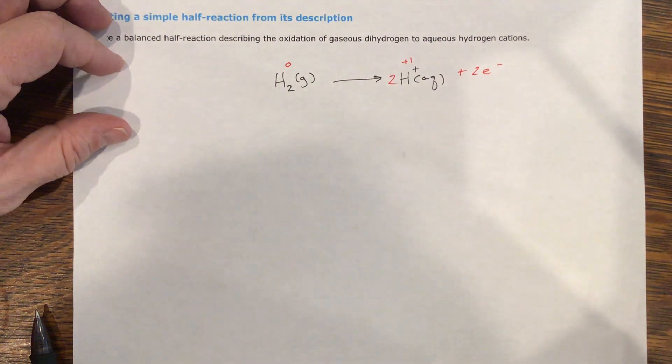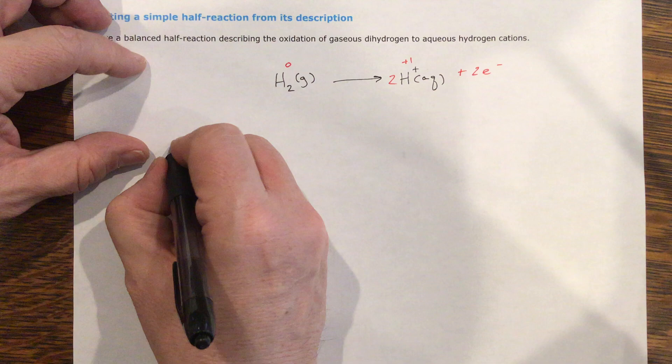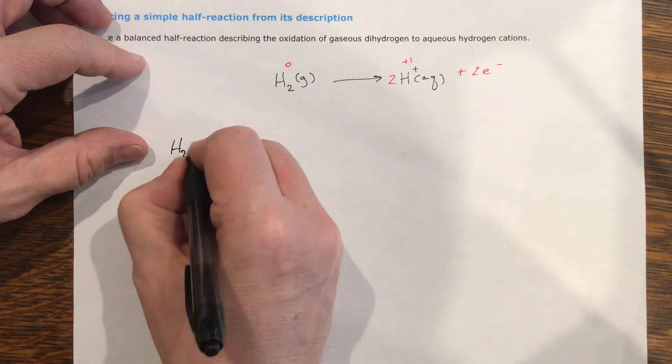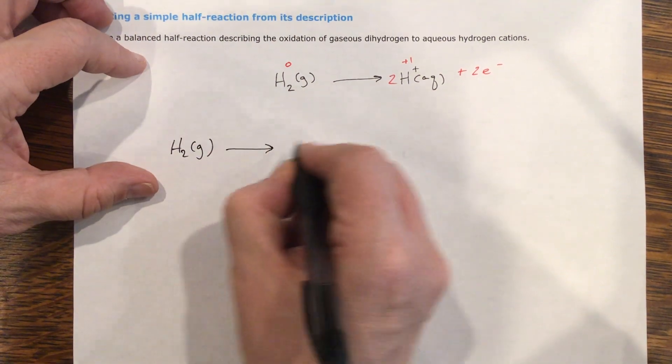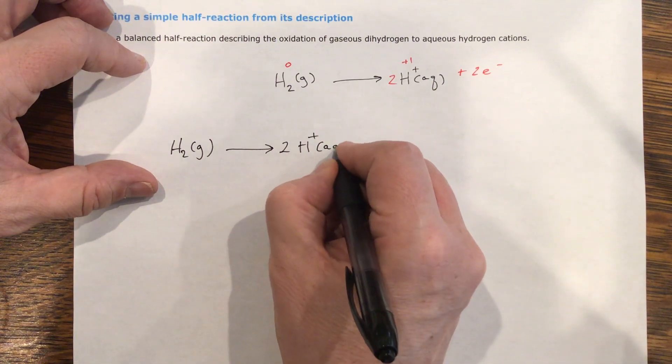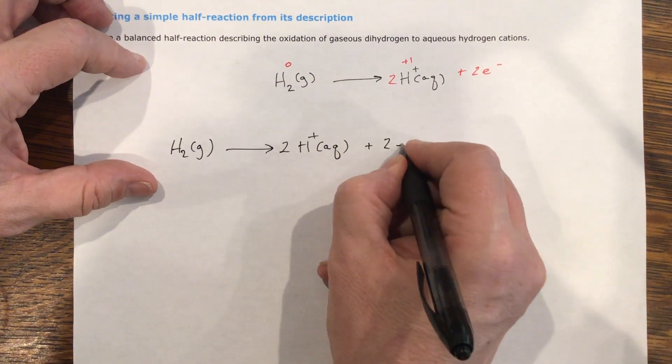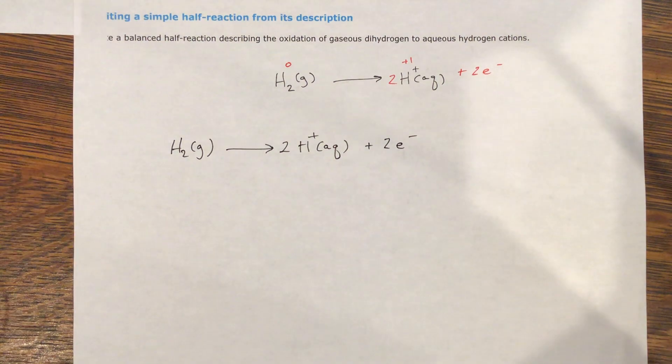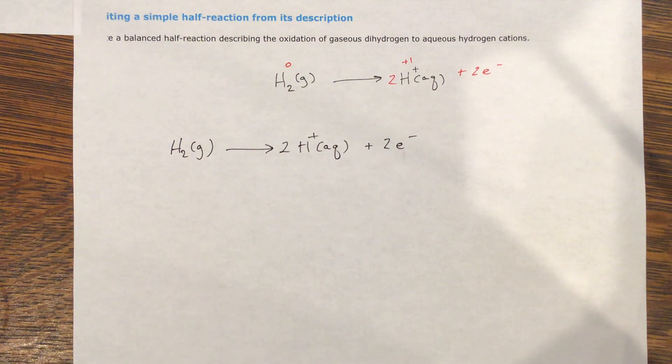And so my answer, I'm just going to rewrite my answer. My answer would be H2 gas yields two H plus aqueous plus two electrons. Nice and easy. I think you can do this.